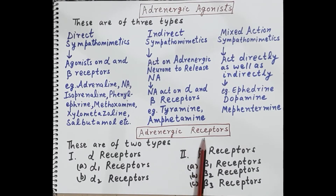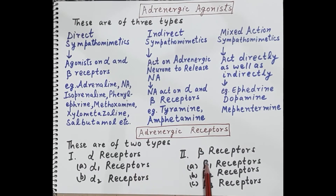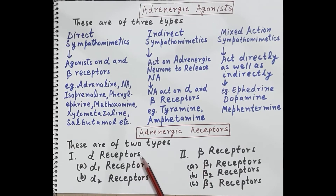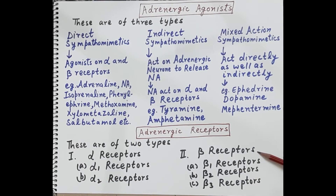Adrenergic receptors are of two types: alpha receptors and beta receptors. Alpha receptors are further divided into two subcategories — alpha 1 and alpha 2 receptors. Beta receptors are further divided into three subcategories — beta 1, beta 2, and beta 3 receptors.